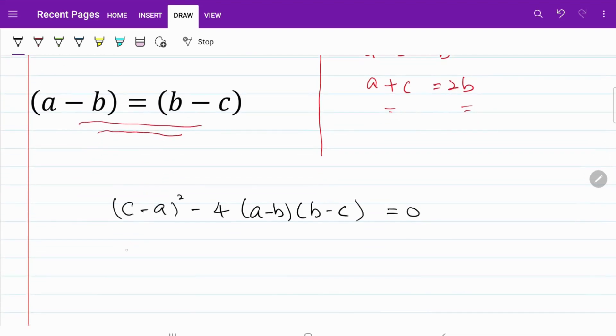What I have now is a² + c² - 2ac - 4(ab - ac - b² + bc). From here, that equals a² + c² - 2ac - 4ab + 4ac + 4b² - 4bc.